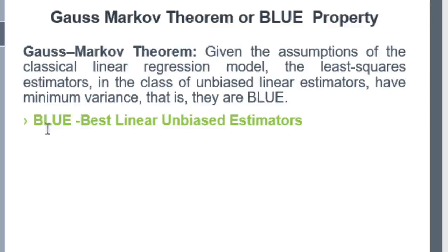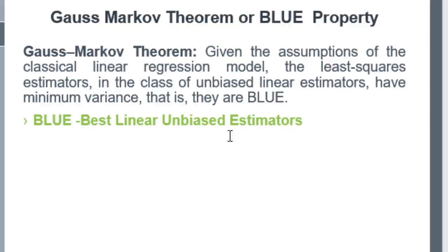BLUE means the linear unbiased estimator will be the best. A linear unbiased estimator will have minimum variance and it will be the best estimator. This is termed as the Best Linear Unbiased Estimator, or the BLUE property of the estimators.